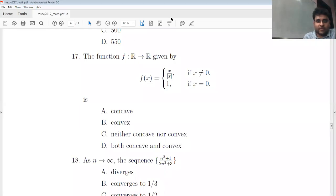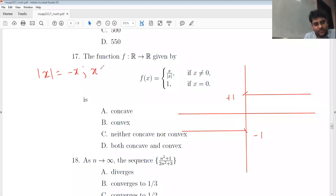Okay, let's take a look at this. This is a 2017 question number 17. So how is the curve looking? The curve looks like this, right? This point is minus one, this point is plus one. The reason is mod X is equal to minus X when it's negative and it's equal to plus X when X is positive.